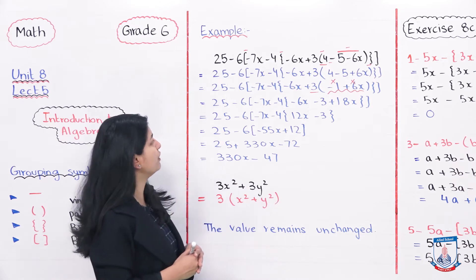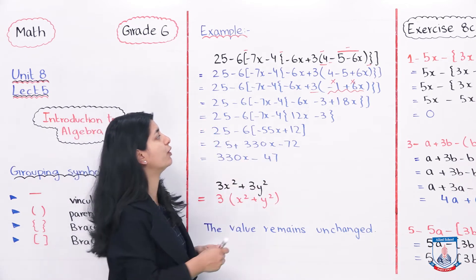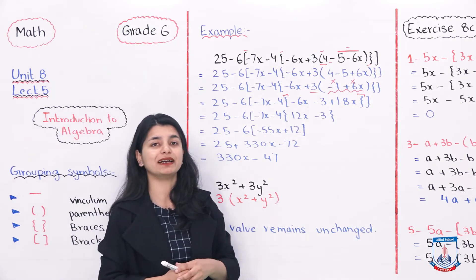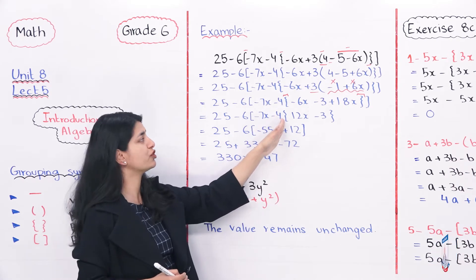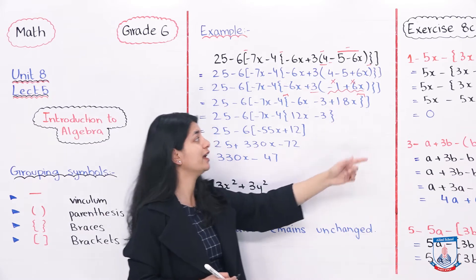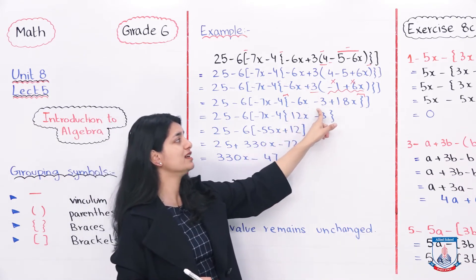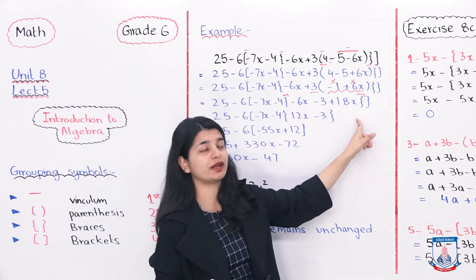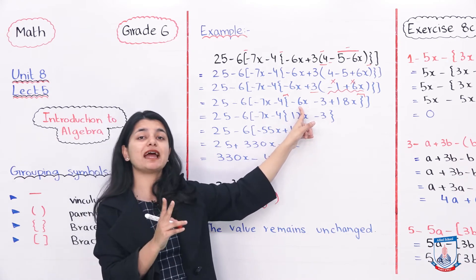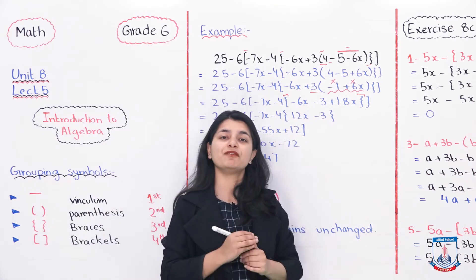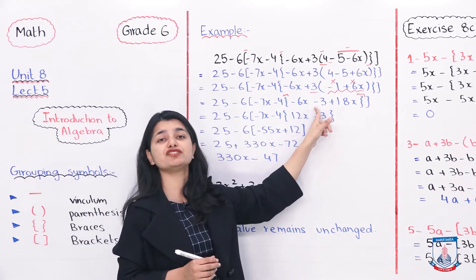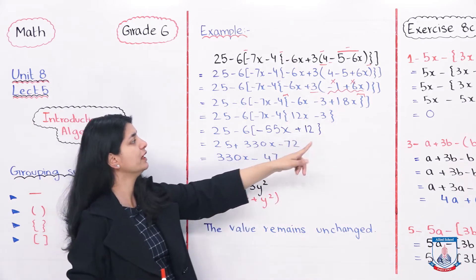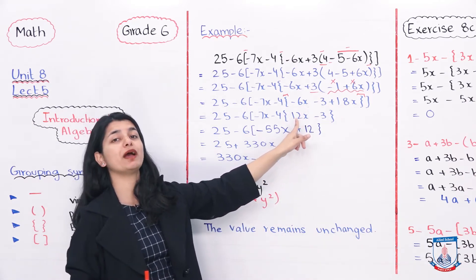The next step involves again copying down most of the part, and then looking at our curly brackets or braces. You can see the elaborated form. Inside the braces we have minus 6x and plus 18x. Since 18x and 6x are like terms, we solve them — 18 is positive, 6 is negative, different signs, so we subtract: 18 minus 6 is 12. So you have 12x, and minus 3 remains as it is. Now you have solved the inside of your braces and got 12x minus 3.